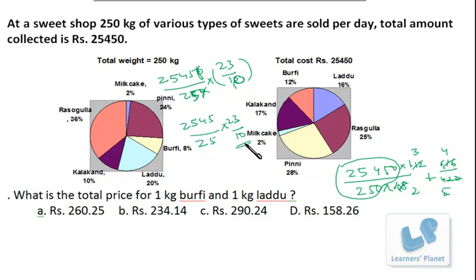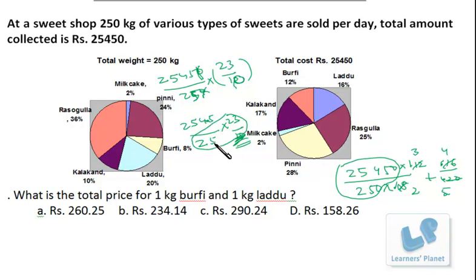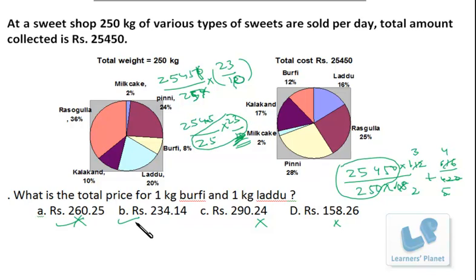Dividing 2545 by 10 gives 254.5, so it's 254.5 into 23 by 25. Notice that 23 by 25 is less than 1, so the final answer will be a bit less than 254.5. Now check the options — any value greater than 254.5 cannot be correct, and anything far lower is also wrong. We are left with only one correct choice, so no need to calculate further.